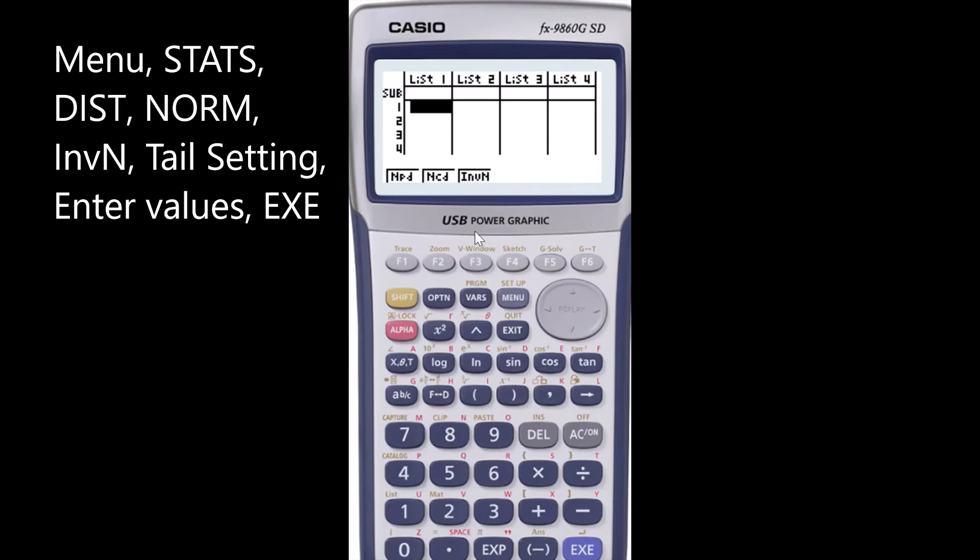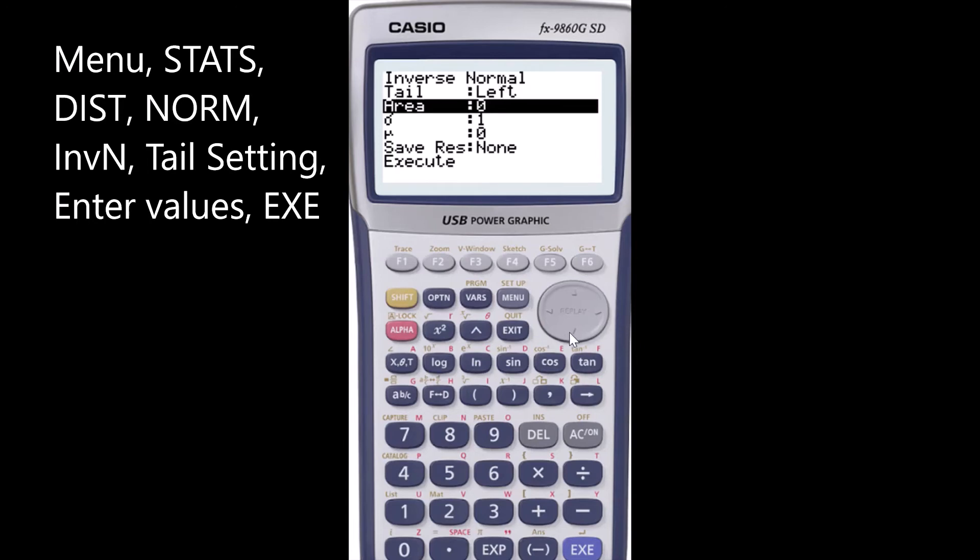We are after inverse normal. Once you hit that please always check the tail setting. In this case tail settings left and we have got the area of 0.8.